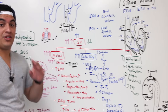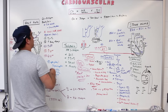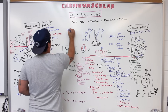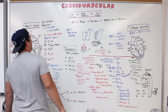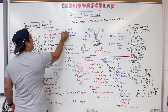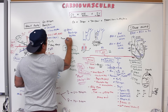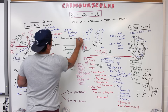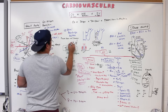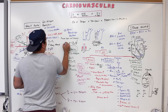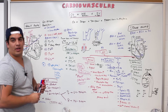One more thing about heart rate: the atrial Bainbridge reflex. When there's an increase in venous return, it causes increased stretch of the atria, which stimulates the cardiac acceleratory center, which in turn signals the SA node to increase heart rate. So the Bainbridge reflex is a positive regulator of heart rate.